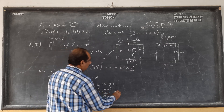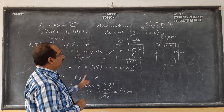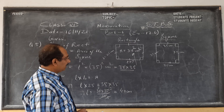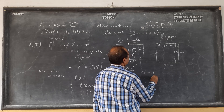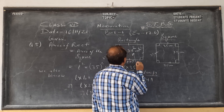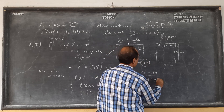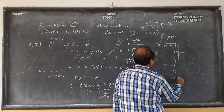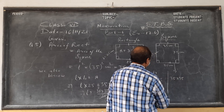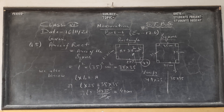So 7 sevens are 49 centimeters, which should be the length of the given rectangle. We can very easily verify: 49 into 25 should be equal to 35 into 35. Check whether these two are equal — then our answer of 49 is correct. So this was question number 5.